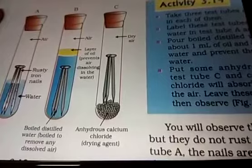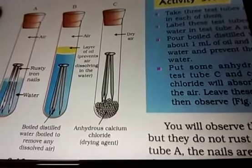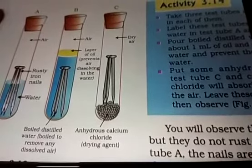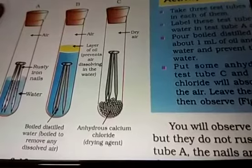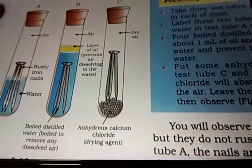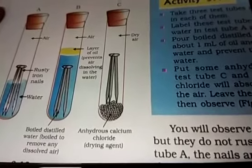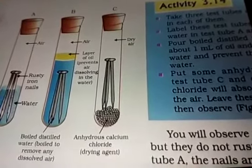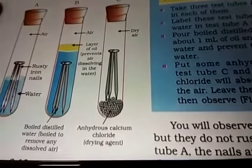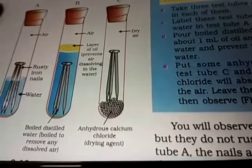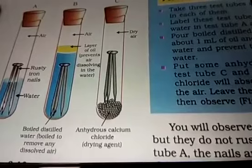What is the meaning of galvanizing? Galvanization is a method of protecting steel and iron from rusting by coating them with a thin layer of zinc. The galvanized article is protected against rusting even if the zinc coating is broken.